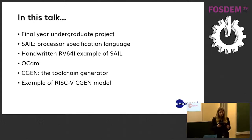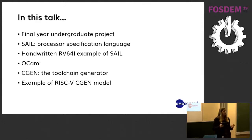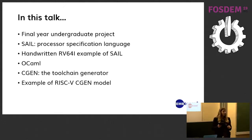That's where my final year undergraduate project comes in. It aims to develop code in a functional programming language that creates the main file required by the toolchain generator from the processor description with minimum human interaction. The RISC-V architecture, more specifically RV64i, will be used as the model. This would represent a significant step towards a complete framework for automatic translation.